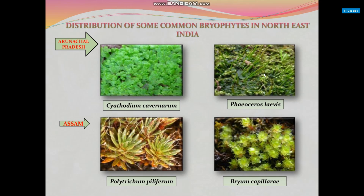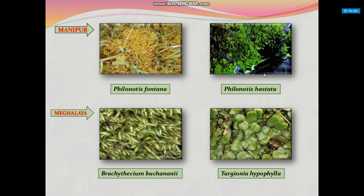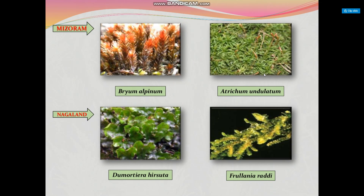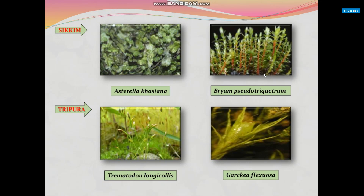Distributions of some common bryophytes in Northeast India include: Cyathodium cavernarum in Arunachal Pradesh; Phaeoceros laevis in Assam; Polytrichum piliferum and Bryum capillare in Assam; Phaeoceros fontana and Phaeoceros hyalostrata in Manipur; Brachythecium and Buxbaumia-related species in Meghalaya; Bryum alpinum and Atrichum undulatum in Mizoram; Dumortiera hirsuta in Nagaland; Asterella khasiana and Bryum schodeanum in Sikkim; and Trematodon longicollis and Garcia phycosa in Tripura.